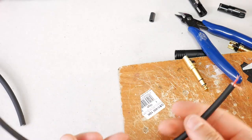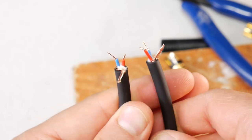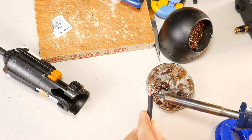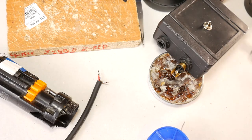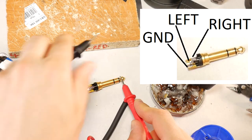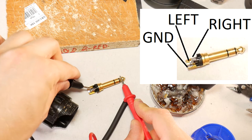Do the same for the other end of the cable. You should end up with something like this. Tin all three wires so that they can be soldered better and easier. Also tin the jack contacts. Use a multimeter to find out which contact is ground, left, and right.